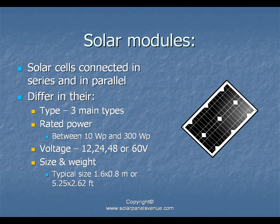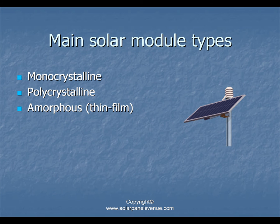Solar modules consist of photovoltaic cells connected in series and in parallel. They differ mostly in their type: monocrystalline, polycrystalline, and thin film. Other points of difference include power output (also known as power rating or rated power), output voltage — which can be 12, 24, 48, or 60 volts — as well as size and weight.